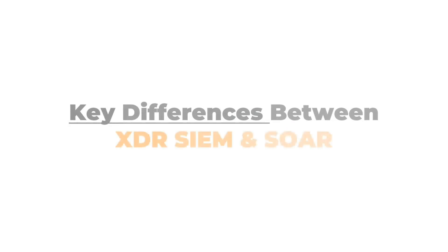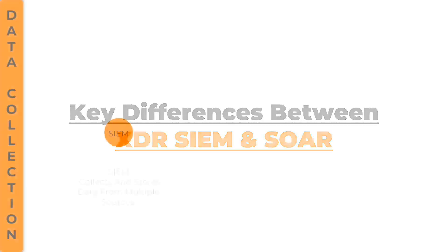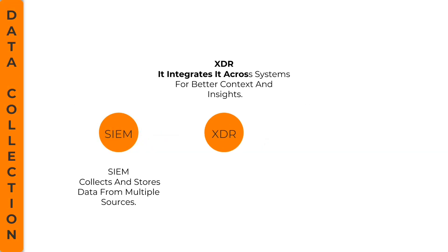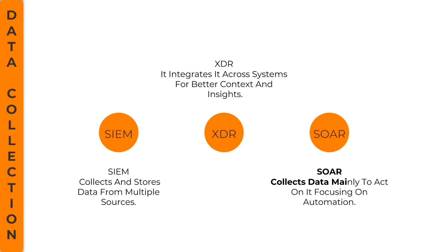Now that we know what each tool does, let's compare them side-by-side. Data collection: SIEM collects and stores data from multiple sources. XDR collects data too, but it integrates it across systems for better context and insights. SOAR collects data mainly to act on it, focusing on automation.